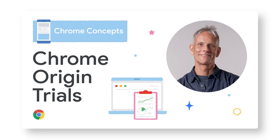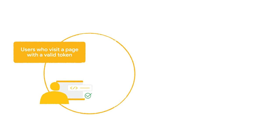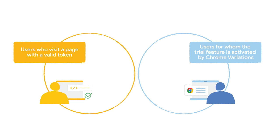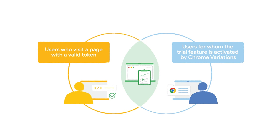Another area where you may encounter Chrome Variations is if you work with Chrome origin trials. If you're not sure what I mean by origin trial, check out the video about Chrome's origin trials in this same series. By default, an origin trial feature is enabled on all pages that provide a valid trial token. In some cases, however, Chrome Variations is used to control activation of an origin trial feature, meaning the feature may not be available to certain users even when they visit a page that provides a valid trial token. Information about the proportion of users eligible for activation is provided with the documentation and updates for each origin trial.